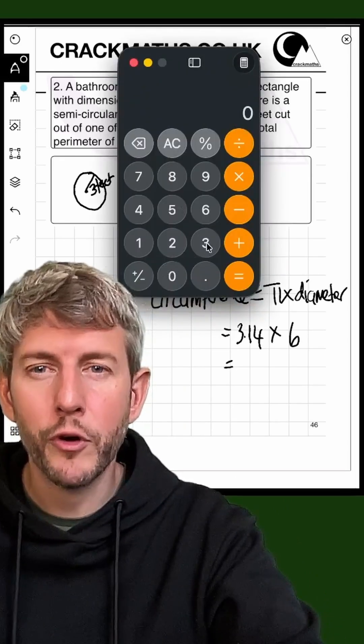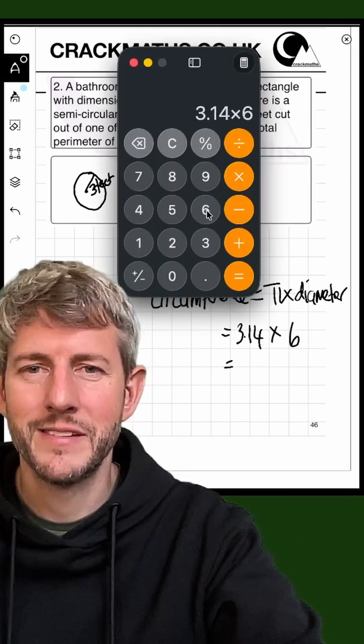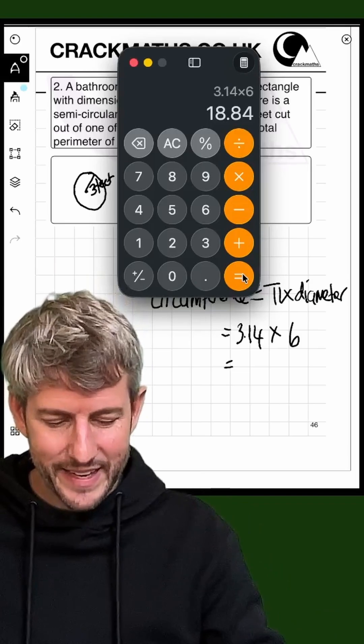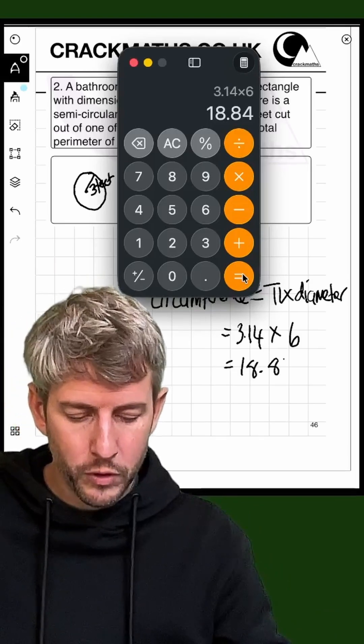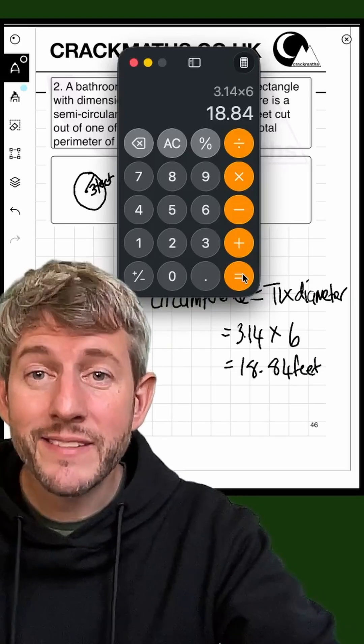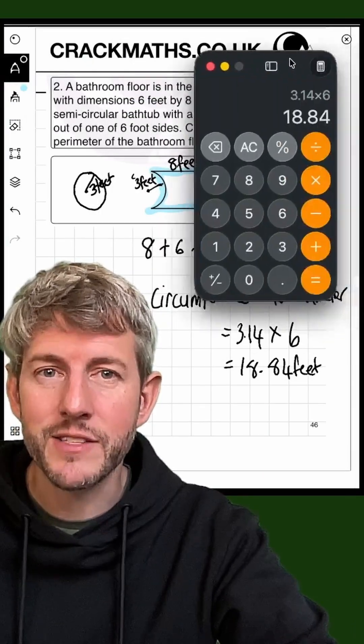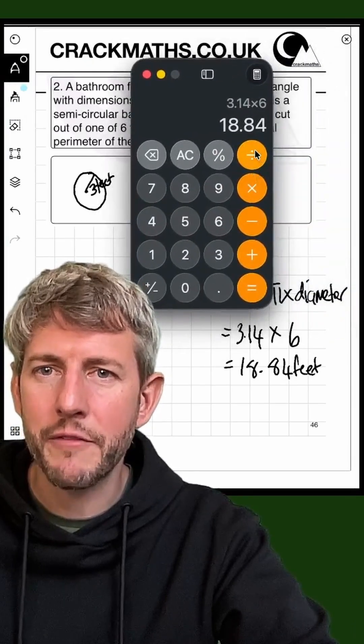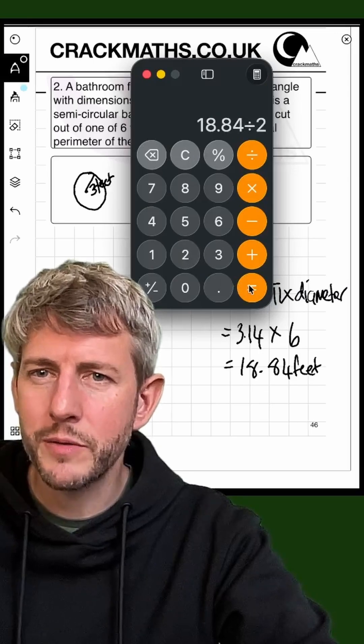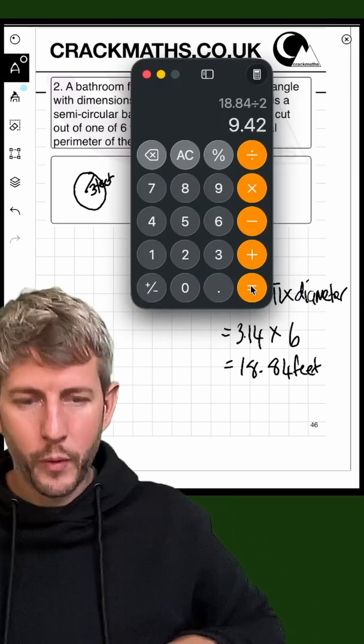So here we go: 3.14 multiplied by 6, and that equals 18.84 feet. Then remember we need to divide that by 2 because we only actually want half of that. So here we go: 18.84 divide that by 2 equals 9.42.